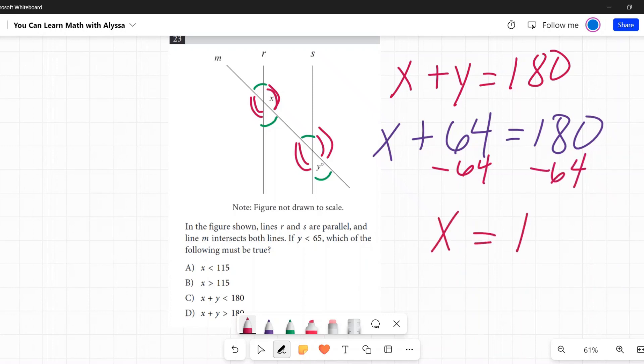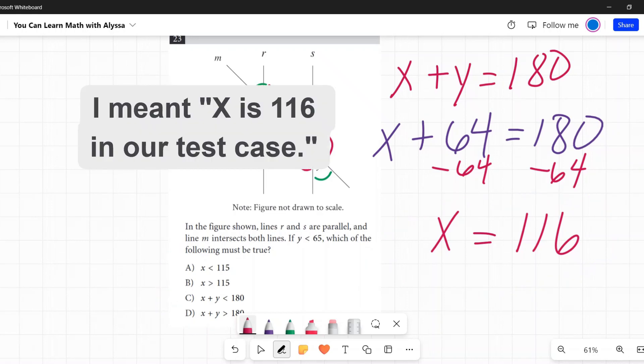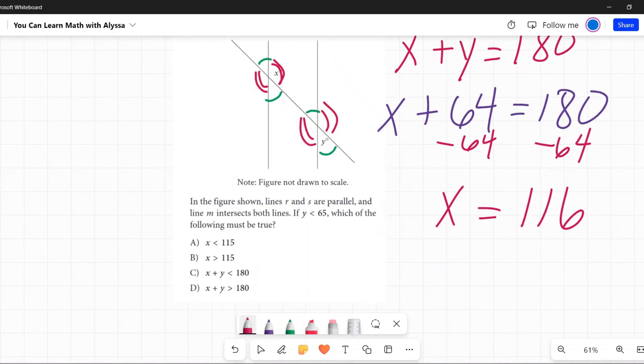Which of these must be true? If y is less than 65, I've discovered that x is 116. Which of those agrees with this? First, I have x is less than 115. Nope, already discovered it's greater than that, so that's out. x is greater than 115? Yeah, that is true.